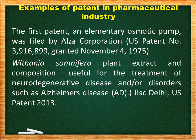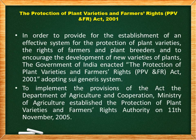Next, we will discuss the Protection of Plant Varieties and Farmers' Rights Act 2001 (PPV&FR Act). This act was enacted to provide an effective system for the protection of plant varieties, the rights of farmers and plant breeders, and to encourage development of new plant varieties. The Department of Agriculture and Cooperation under the Ministry of Agriculture established the PPV&FR Authority on 11th November 2005.